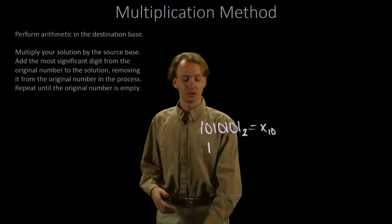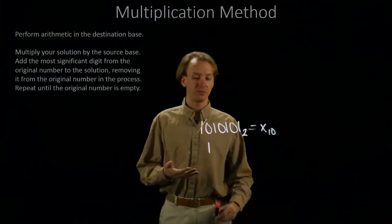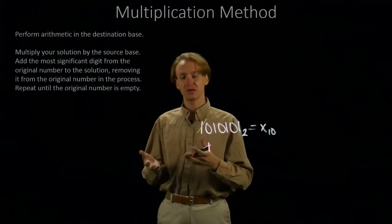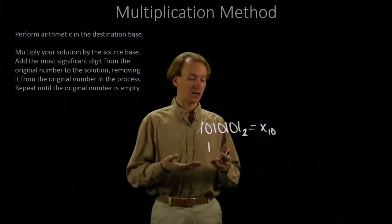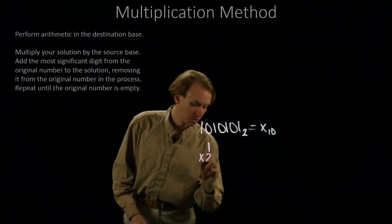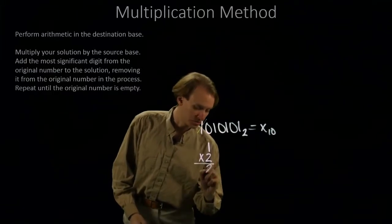So, this 1 has been used. I'm not going to need to come back to it. So, now I have something in my solution, and I'm going to go back to the beginning of my algorithm and start again. So, now I'm going to multiply this by 2. So, 1 times 2 gives me 2.